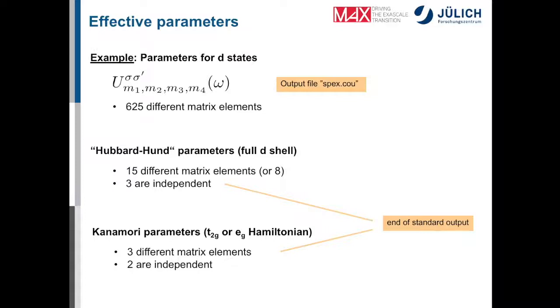Now, forgetting about this formal spin dependence here and the frequency dependence, how many matrix elements would we get? Well, we have five M quantum numbers, so we have 5 times 5 times 5 times 5, 625 different matrix elements. And the non-zero ones are written to an output file in the Spex code called Spex.out. This is a lot of numbers. But in fact, if you allow for some simplifications, namely, the first is that you assume that your partially screened Coulomb interaction is isotropic, and the second is that you assume that certain radial integrals are independent of these M quantum numbers, these are called the Slater integrals. If you allow for these two simplifications, then only 15 out of the 625 are actually different matrix elements.